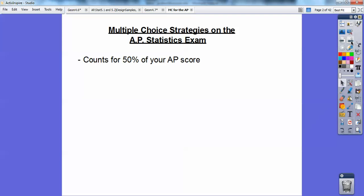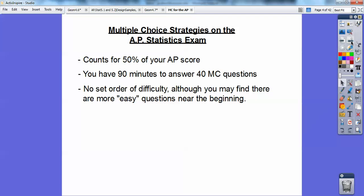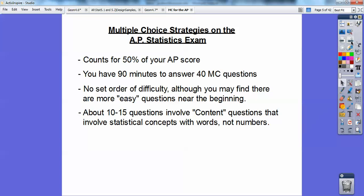The multiple choice counts for 50% of your AP score. You have 90 minutes to answer 40 questions. There's no set order of difficulty, though you may find easier questions near the beginning. About 10 to 15 questions are content questions involving statistical concepts expressed with words, not numbers—definitions and terminology.